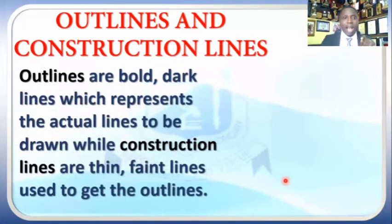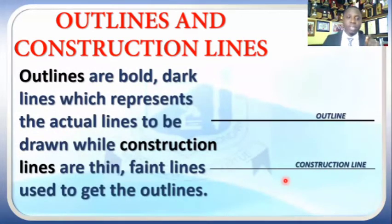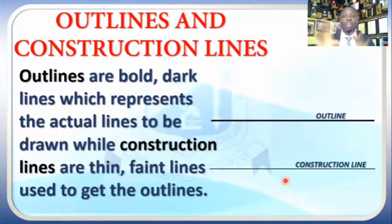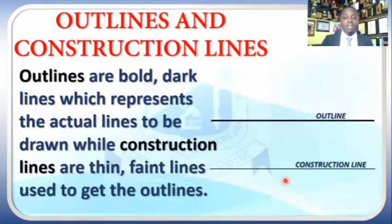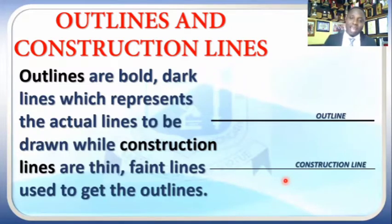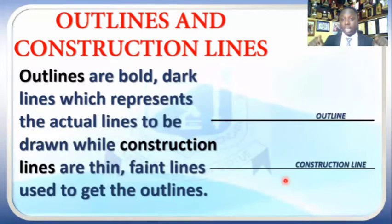What are outlines? Outlines are bold, dark lines which represent the actual lines to be constructed. If I want to construct an angle of 60 degrees, I might have lots of markings on my paper, but the outline will be those two lines that show me 60 degrees. Every other line should be a construction line — construction lines are thin and faint lines that are used to get your outlines. When you scribe an arc, it should be a construction line. Your actual constructed drawings should be drawn as an outline.